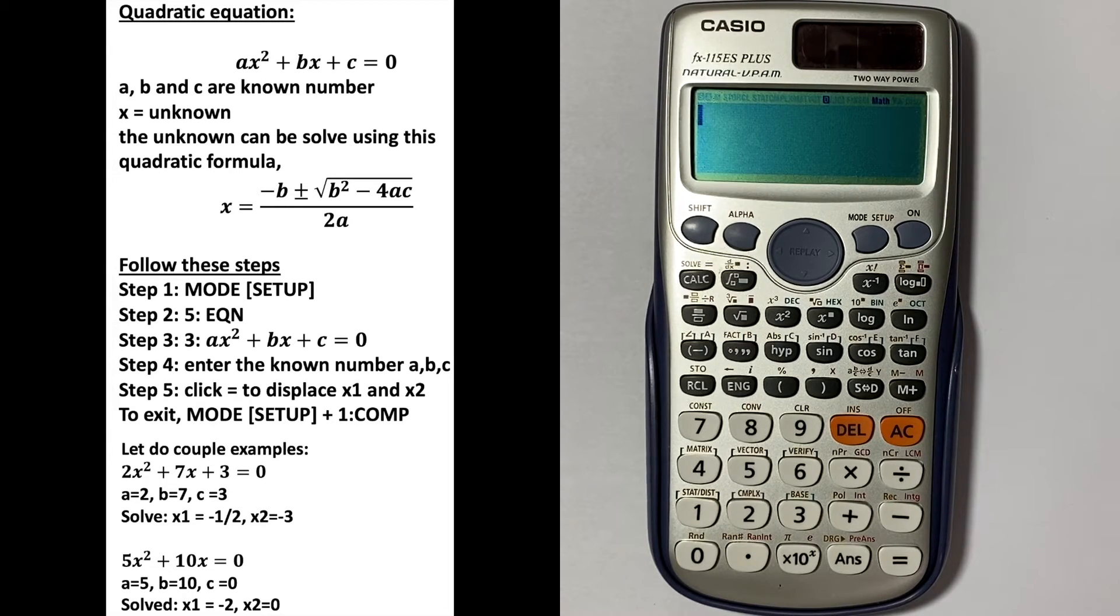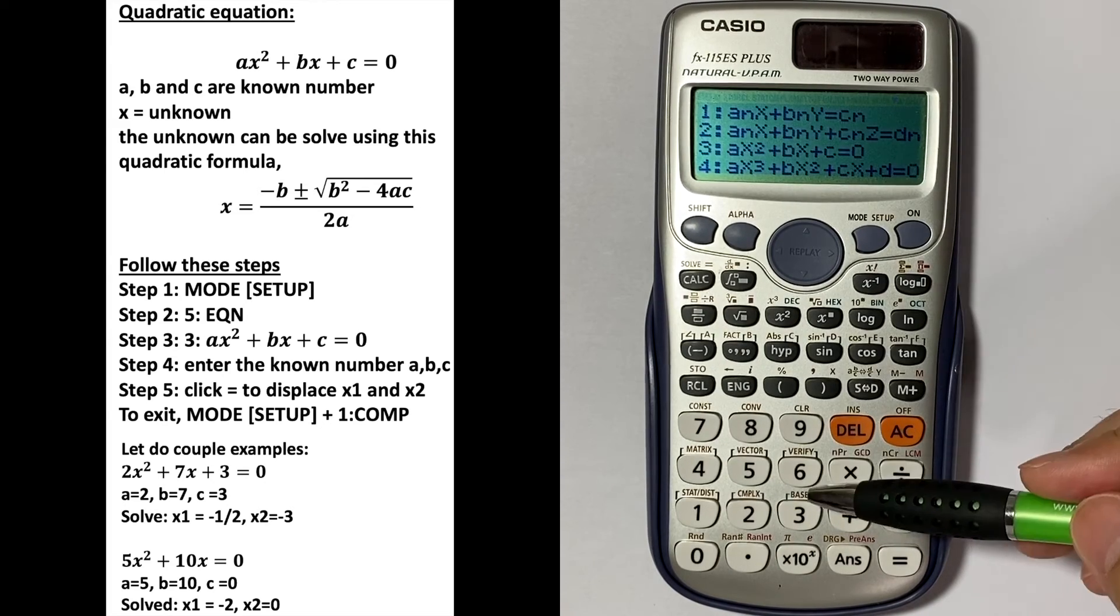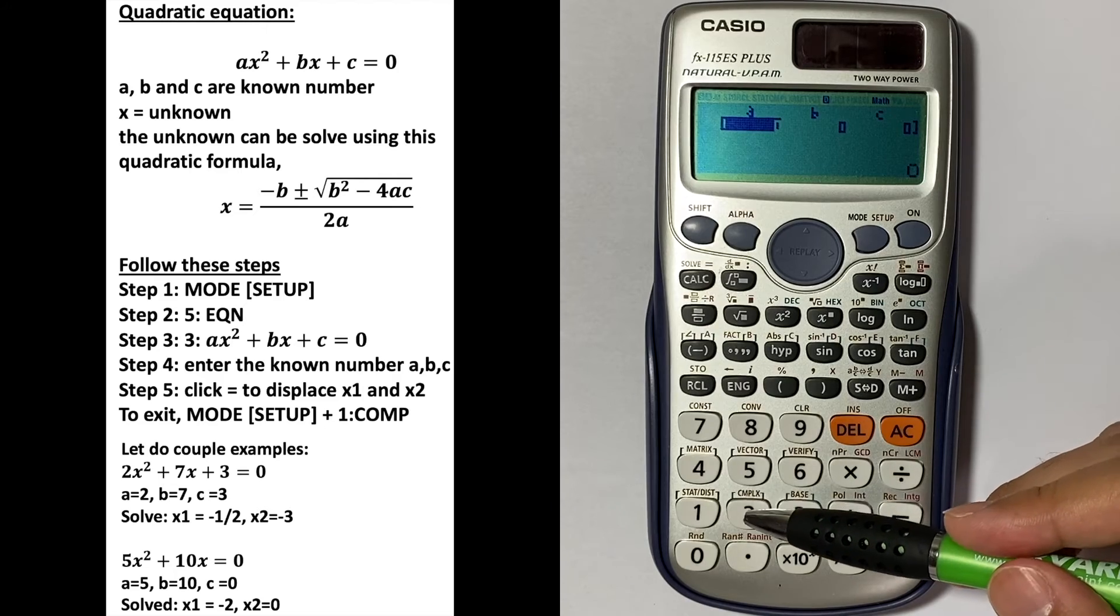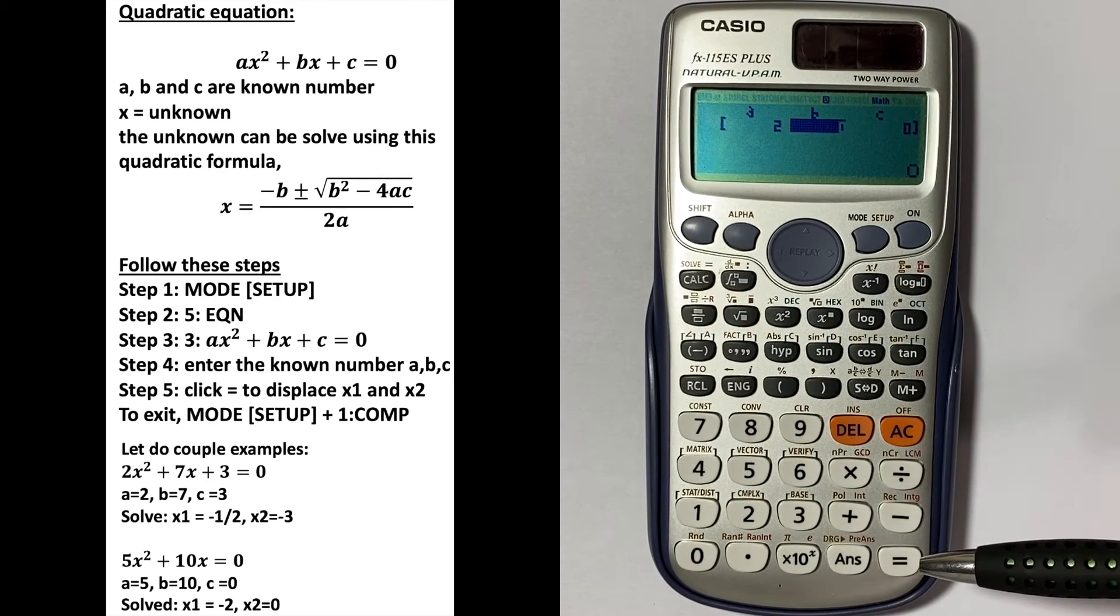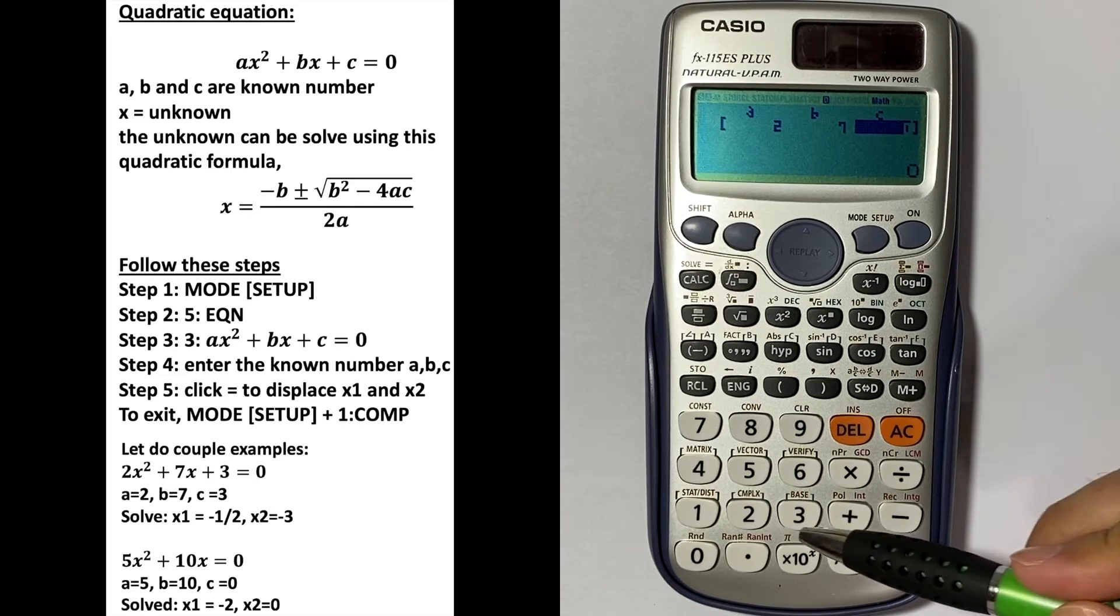Here, a is 2, b is 7, and c is 3. Let's get into the function location. Go to mode number five, number three. Here, a is 2, b is 7, and c is 3.